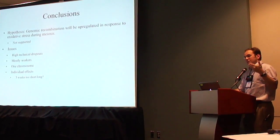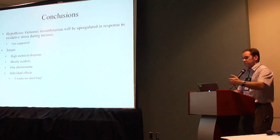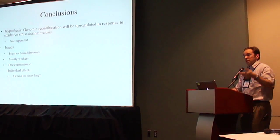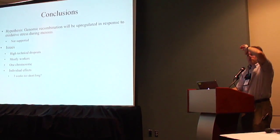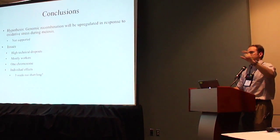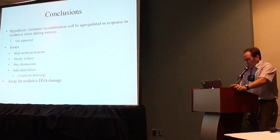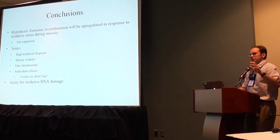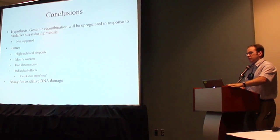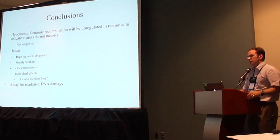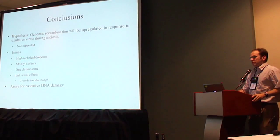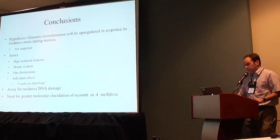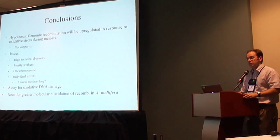The three-week waiting period was an estimate for how long it would take for the already-formed eggs to clear and the stress-affected eggs to be laid — maybe it was too long. There were individual effects where pre-injection recombination rates were higher in some colonies and lower in others. I would also have liked to have done an assay for oxidative DNA damage to confirm significant DNA damage occurred, but have not had time to produce that. Nevertheless, this work illustrates a greater need for elucidating and studying the molecular mechanisms of recombination in Apis mellifera.